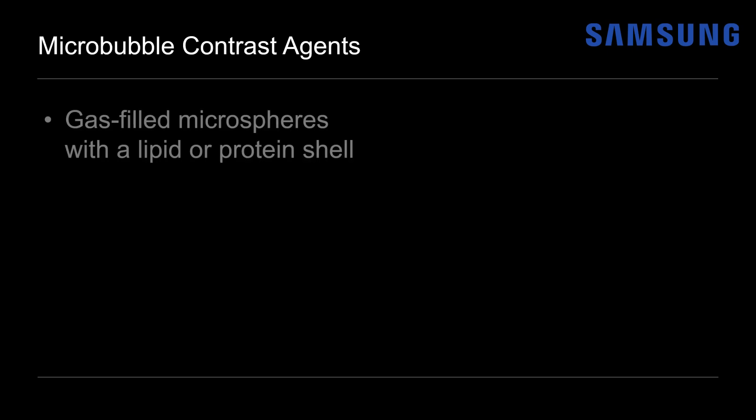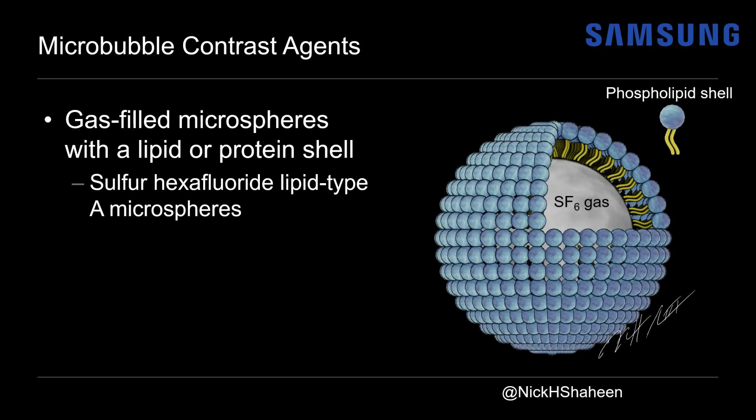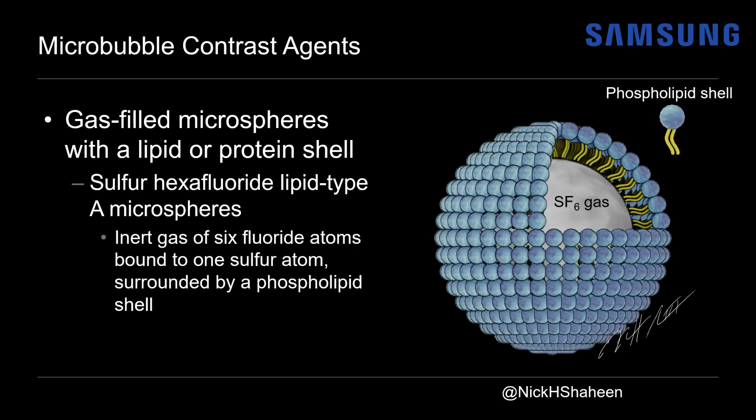Let's start by talking about the microbubble contrast agents that we use in contrast ultrasound. These are gas-filled microspheres that have a lipid or protein shell, and the agent I'll be showing you in these cases is sulfur hexafluoride lipid type A microspheres. This is an inert gas of six fluoride atoms bound to a single sulfur atom, surrounded by a phospholipid shell.